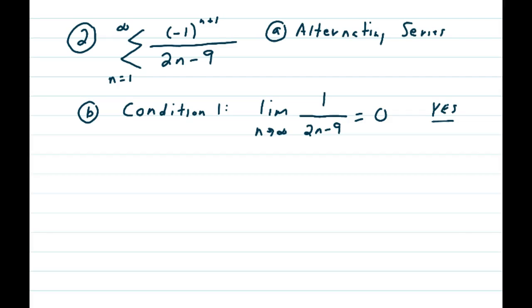So condition 1 is you take the limit as n approaches infinity of the function without its alternator, that is 1 over 2n minus 9, you get an answer of 0, which is an affirmative, a yes, which means that this series might be going on to convergence.